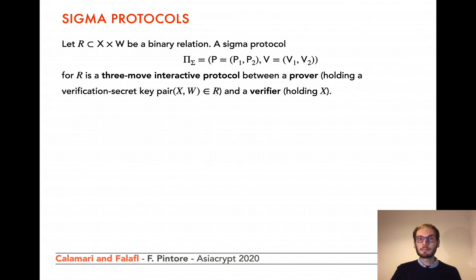An OR proof is a special sigma protocol. A sigma protocol for a polynomially computable binary relation R on the Cartesian product of two finite sets X and W is an interactive protocol between a prover and a verifier, composed by four algorithms: P1 and P2 run by the prover, and V1 and V2 run by the verifier. The protocol is three-move. The prover holds a secret key W for the verification key X, and the verifier holds the verification key X. The goal is making the prover prove to the verifier that they possess a valid secret key without revealing anything more than the fact they know W.